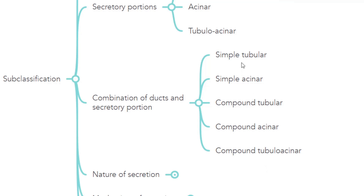In simple tubular, it has a single duct with tubular form of secretory portion. Simple acinar has a single duct and the secretory portion is in the form of acinus. Compound tubular has tubular form and branching ducts. In compound acinar, it has branching ducts and the secretory portion is in the form of acinus. Compound tubuloacinar has branching ducts with both tubular form and acinar secretory portions.